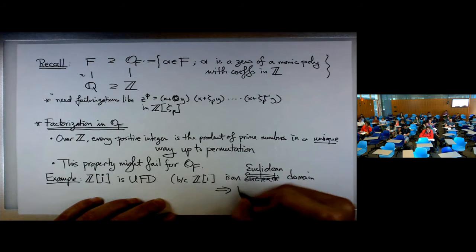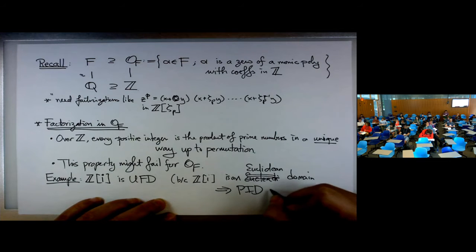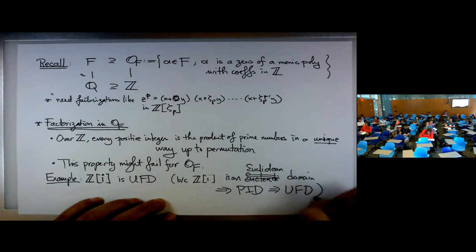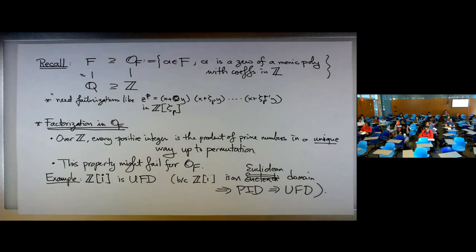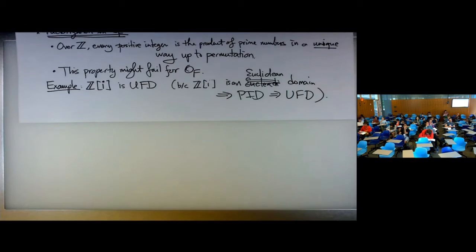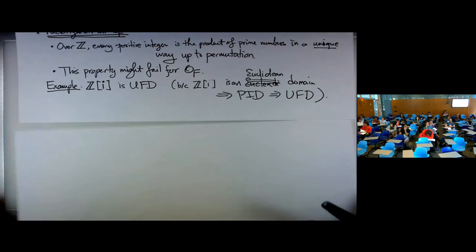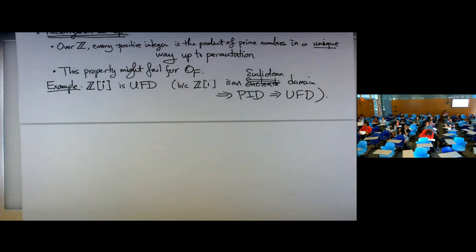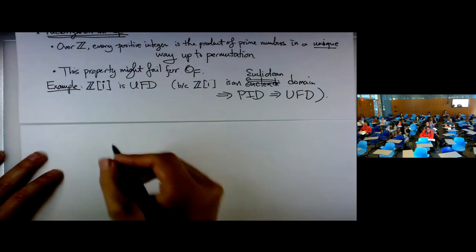This implies Z[i] is a PID, a principal ideal domain, and therefore it's a unique factorization domain. Let's make it more explicit — what the factorization looks like in Z adjoin i. This is the first example of the ring of integers of a number field and we should understand it.